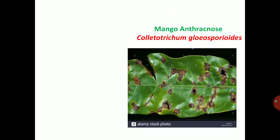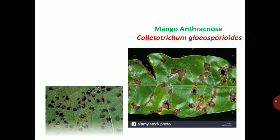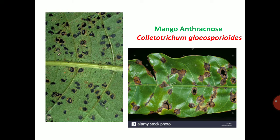First of all, mango anthracnose. Colletotrichum gloeosporioides infects all the aerial parts of plants. The first symptom is leaf symptom. On leaves, it will produce black colored depressed spots with the shot hole symptom.